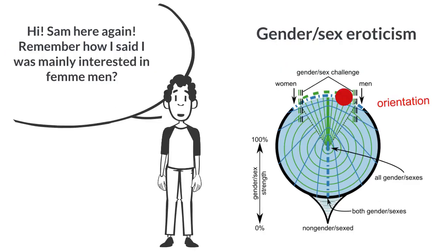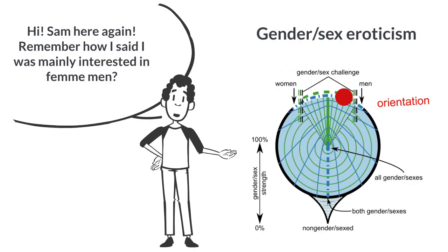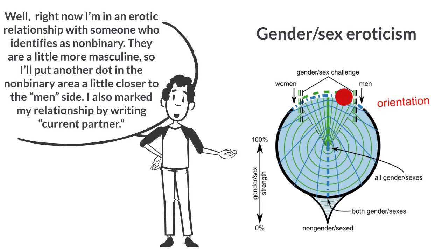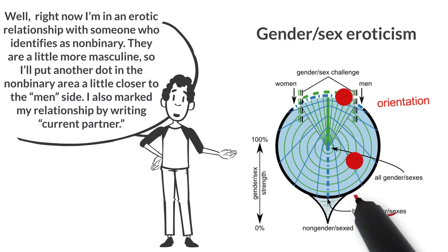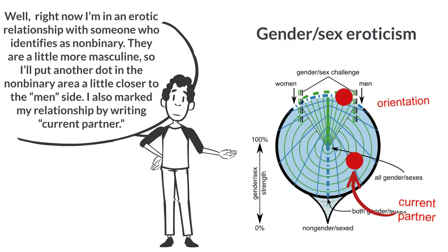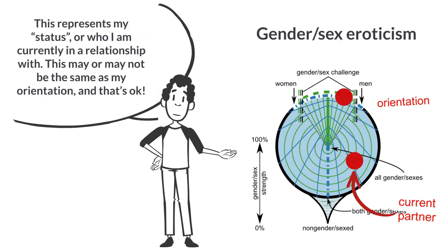Sam here again. Remember how I said I was mainly interested in femme men? Well, right now I'm in an erotic relationship with someone who identifies as non-binary. They are a little more masculine, so I'll put another dot in the non-binary area, a little closer to the men's side. I also marked my relationship by writing 'current partner.' This represents my status, or who I am currently in a relationship with. This may or may not be the same as my orientation, and that's okay.